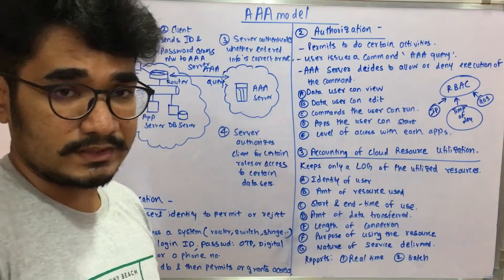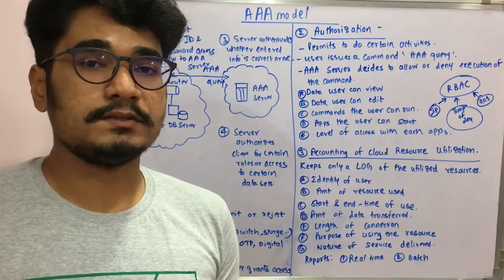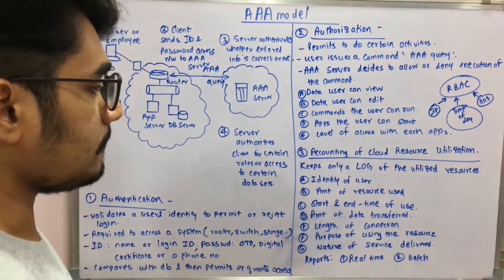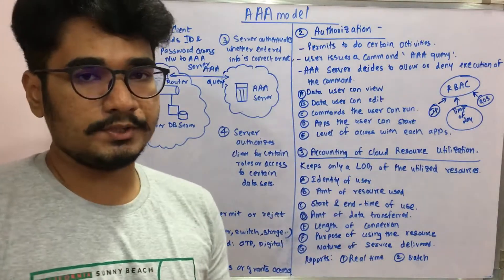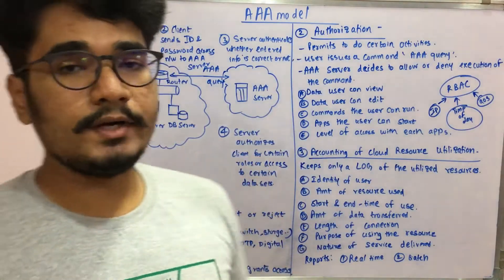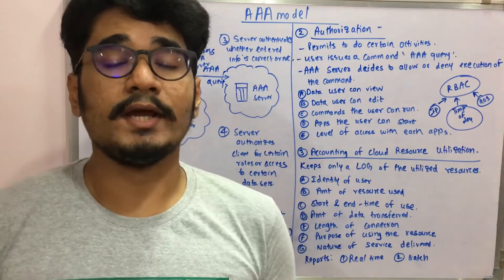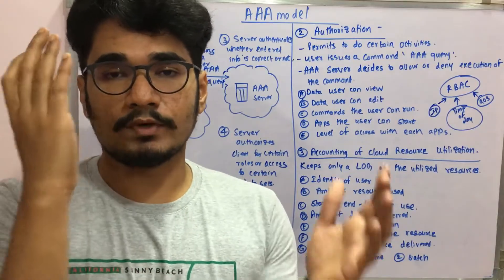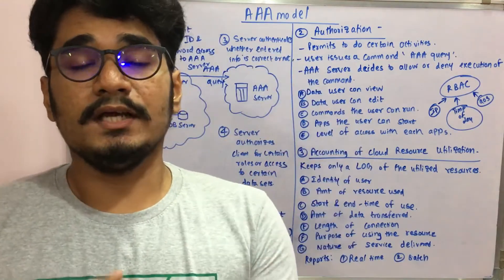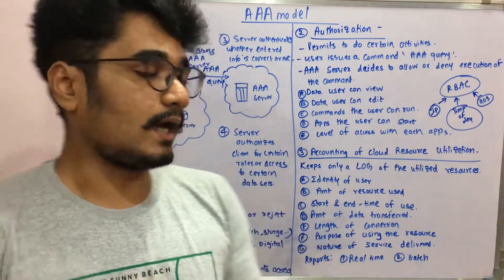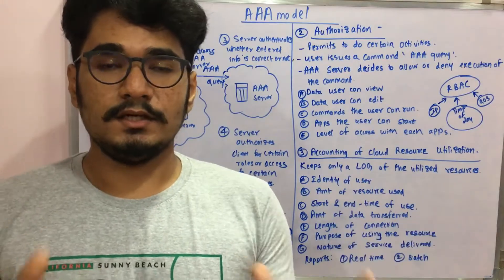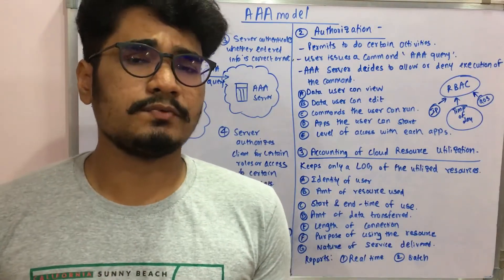The report also captures the nature of the service delivered — whether it was a phone call or direct interaction. There are two kinds of accounting reports: real-time accounting information, which monitors all activities gathered throughout a particular day from opening to close of business, and batch accounting information, which covers a monthly period and is mainly used for historical or transactional data.